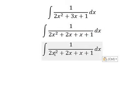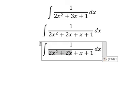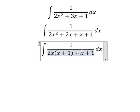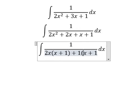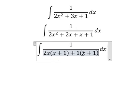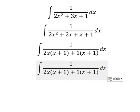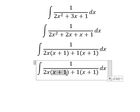Next we can do factorization. The denominator becomes 2x times (x + 1) plus 1 times (x + 1). Now we can factor out (x + 1).